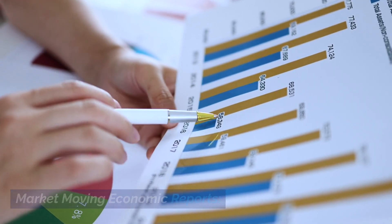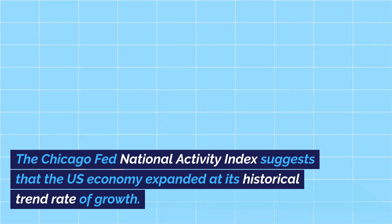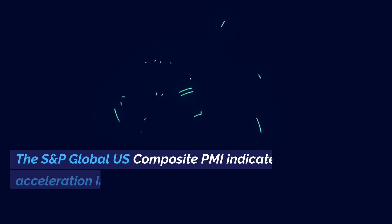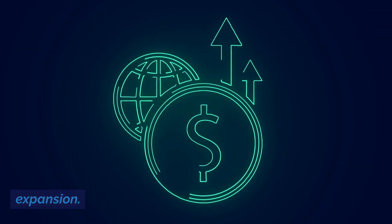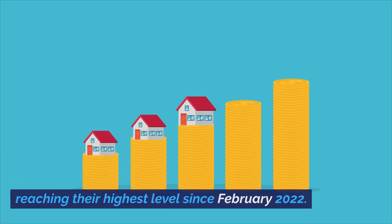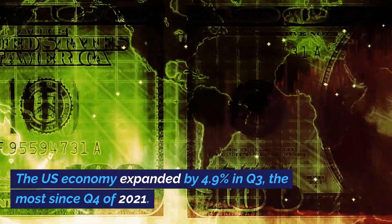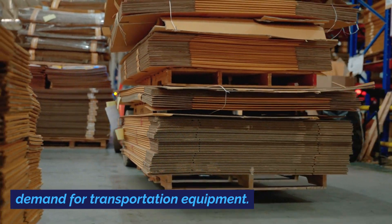Market Moving Economic Reports: Several economic reports were released this past week, providing insights into the state of the U.S. economy. The Chicago Fed National Activity Index suggests that the U.S. economy expanded at its historical trend rate of growth. The S&P Global U.S. Composite PMI indicates an acceleration in the pace of private sector output expansion. Sales of new single-family houses surged, reaching their highest level since February 2022. The U.S. economy expanded by 4.9% in Q3, the most since Q4 of 2021. New orders for manufactured durable goods rebounded significantly, driven by strong demand for transportation equipment.